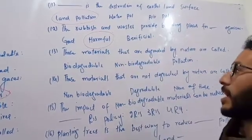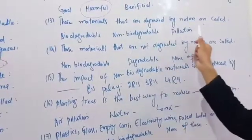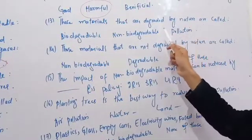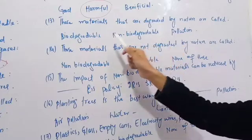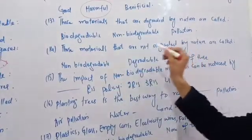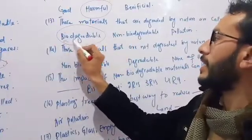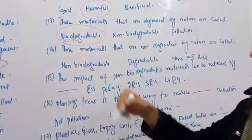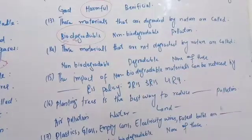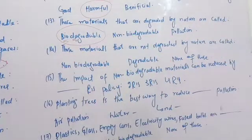Those materials that are degraded by nature are called biodegradable. Those materials that are not degraded by nature are called non-biodegradable.